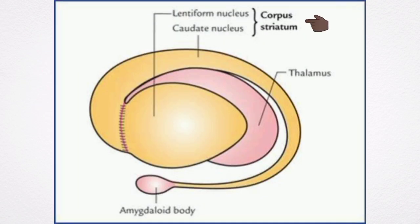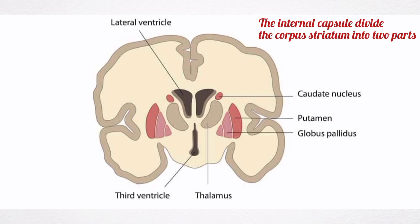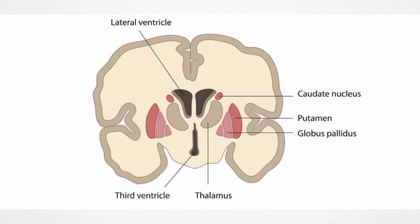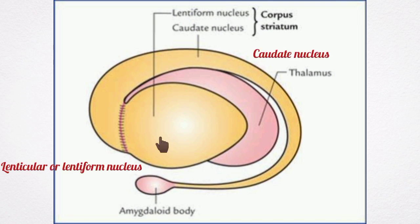The corpus striatum is a mass of grey matter situated at the base of the cerebral cortex, in close relation to the thalamus. Usually, the internal capsule incompletely divides the corpus striatum into two parts, which are the caudate nucleus and the lenticular nucleus.